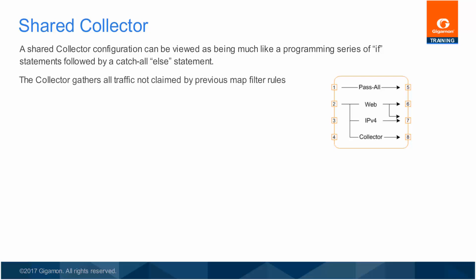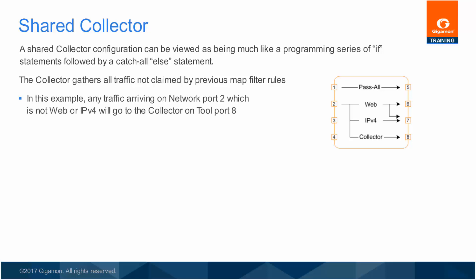The collector gathers all traffic not claimed by previous map filter rules. In this example, any traffic arriving on network port 2 which is not web or IPv4 will go to the collector.